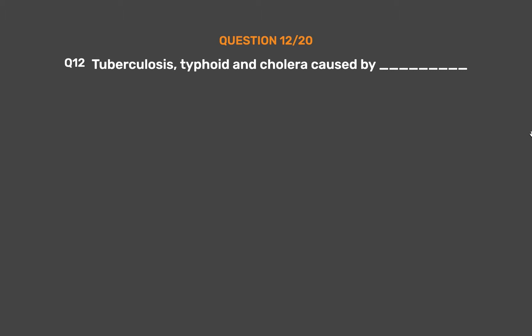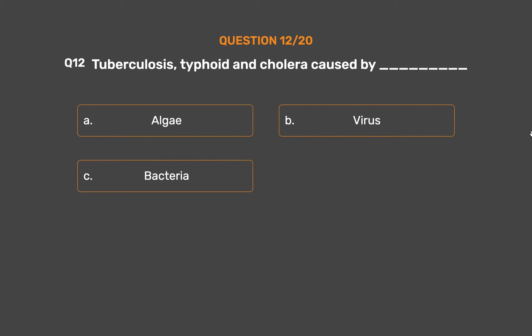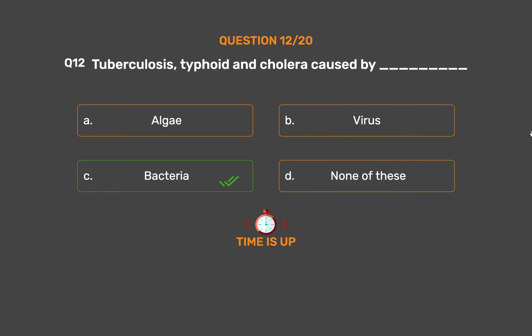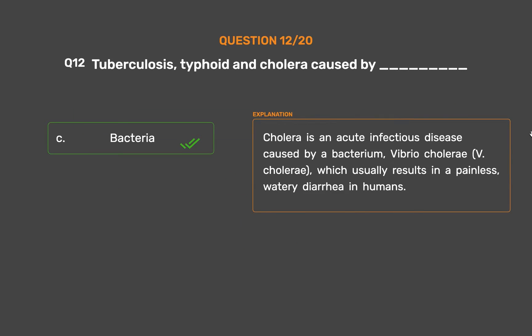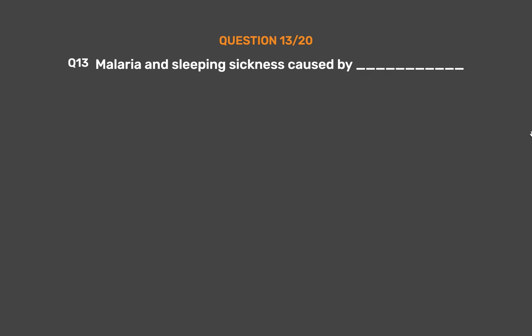Question number 12. Tuberculosis, Typhoid, and Cholera are caused by which microorganism? Option A: Algae. Option B: Virus. Option C: Bacteria. Option D: None of these. The correct answer is Option C, Bacteria. Cholera is an acute infectious disease caused by the bacterium Vibrio cholerae, which usually results in painless, watery diarrhea in humans.